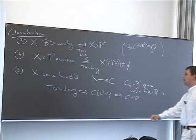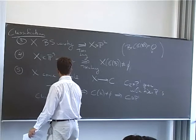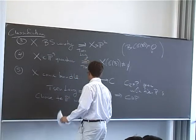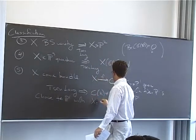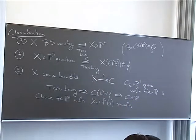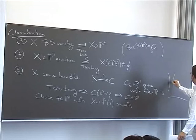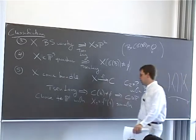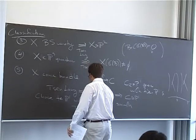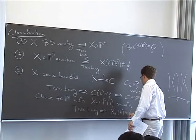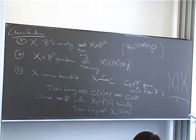But Tsen's theorem implies that C of K is not equal to the empty set, which implies that C is isomorphic to P1. And then, if we choose a point, say, t in P1, where the corresponding fiber is smooth. And since P1 has a lot of K points, I can certainly find one point where the corresponding fiber is smooth. Well, this is a conic, and that's X of t.